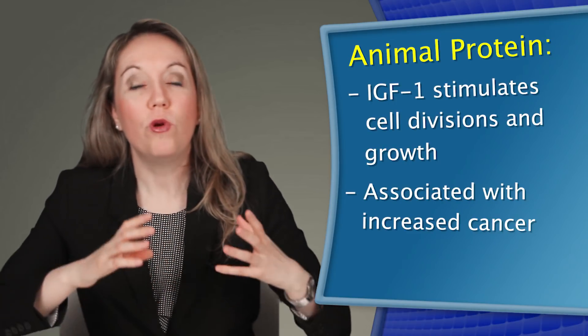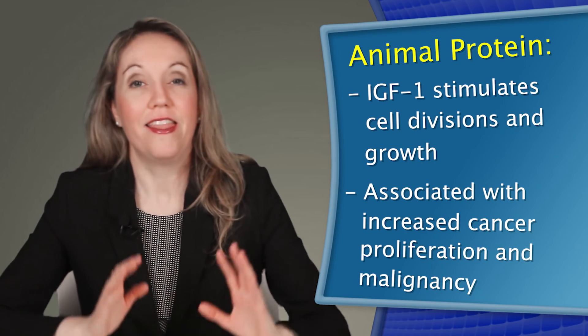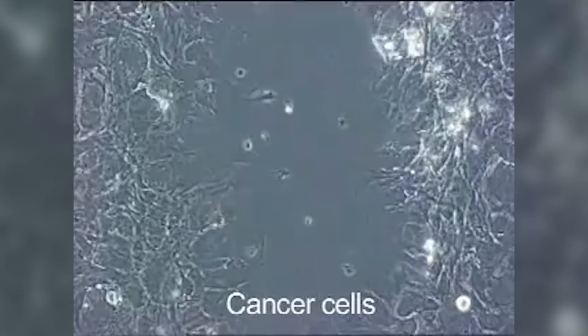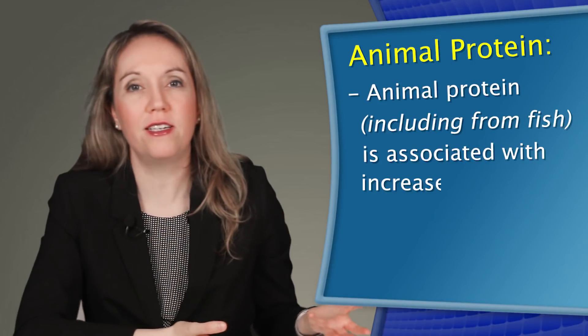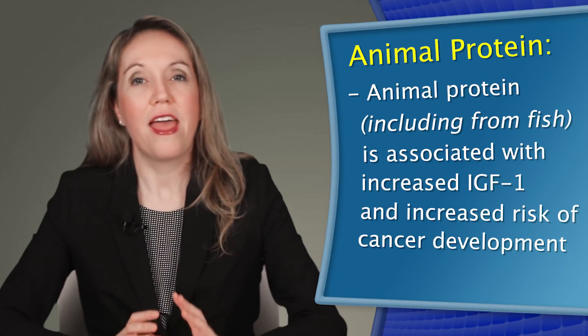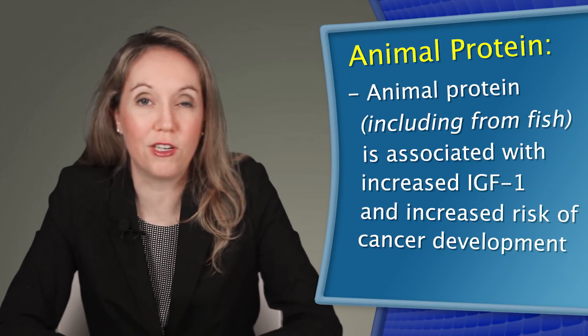And IGF-1 stimulates cell division and growth, and is associated with increased cancer proliferation and malignancy. The role of IGF-1 in cancer promotion is well understood, and animal protein, including from fish, is associated with increased circulating levels of this hormone, and therefore is associated with increased risk of cancer development.